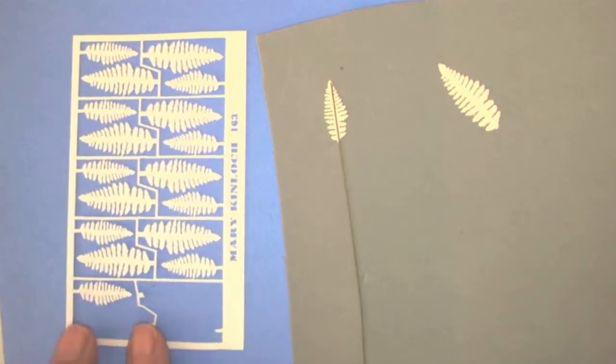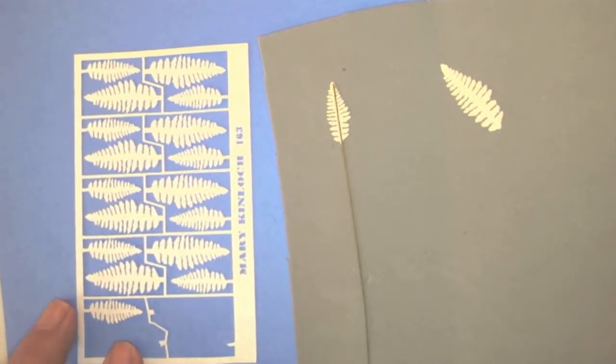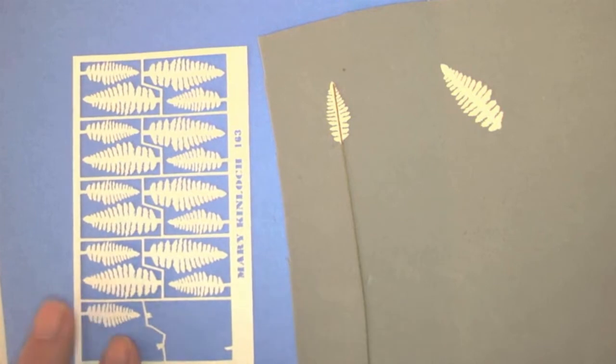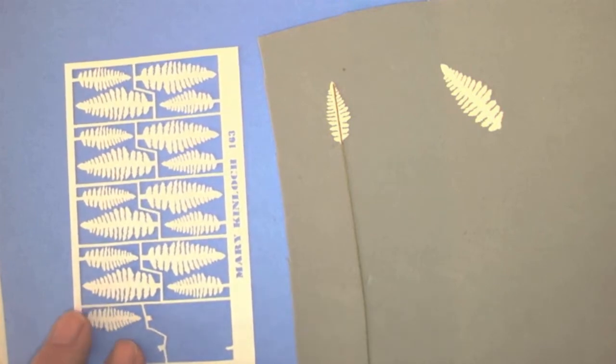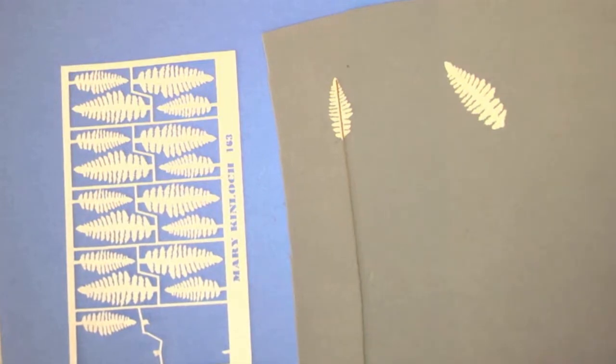Before you do anything with it, remove the fern from the paper at the connection. Then the next thing that I do is puddle out some white glue.